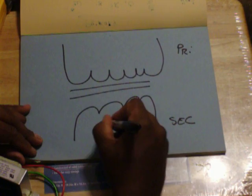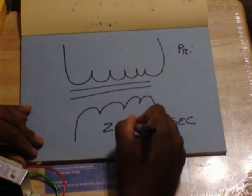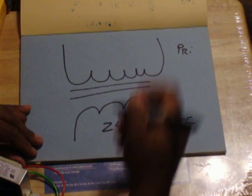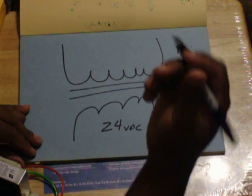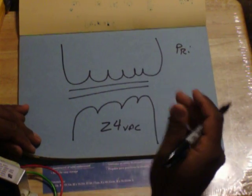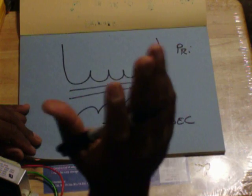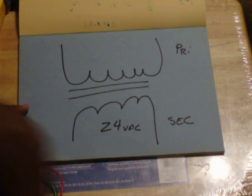For air conditioning, your secondary voltage is 24 volts AC. Now, in your primary, you could apply 110 volts, 208, 230 volts, but make sure you have the right transformer.